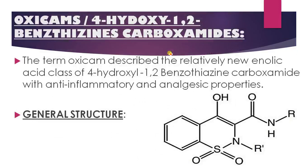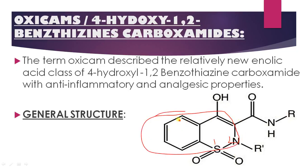Now we discuss the details of oxycams, called as 4-hydroxy-1,2-benzothiazine-3-carboxamide. The numbering is: position 1, position 2, and this is the thiazine ring. When this thiazine is fused with benzene, it is called benzothiazine. Position 4 is hydroxy, and position 3 is the carboxamide — C=O-NH2, where H may be replaced with an R functional group or alkyl group. The term oxycams describes a relatively new enolic acid class of 4-hydroxy-1,2-benzothiazine-3-carboxamides with anti-inflammatory and analgesic properties. Examples are piroxicam, meloxicam and isoxicam.